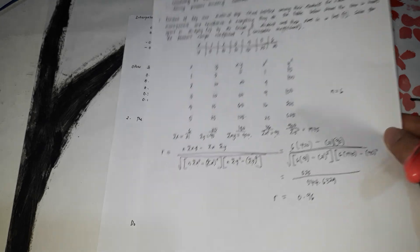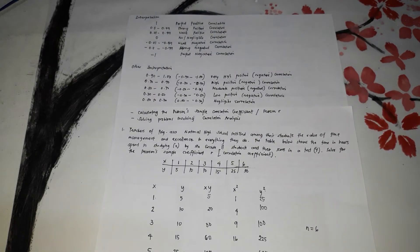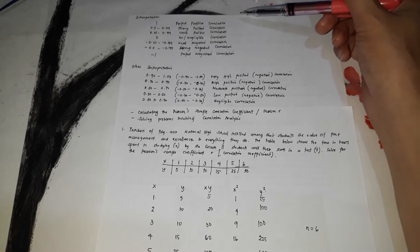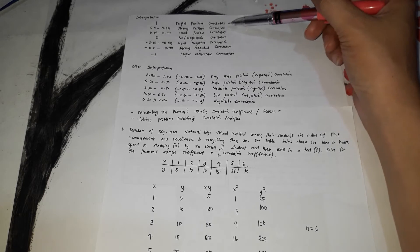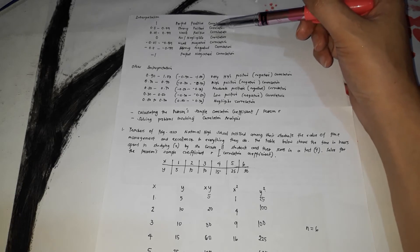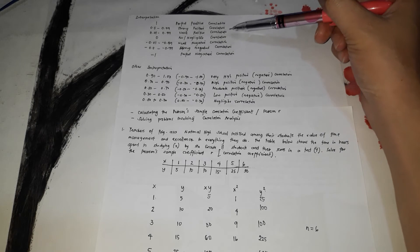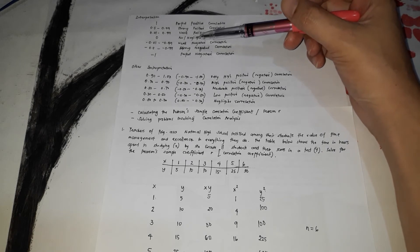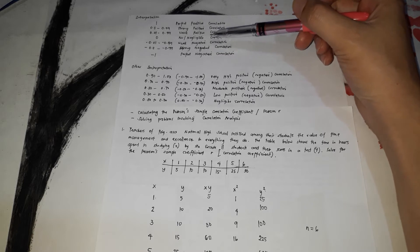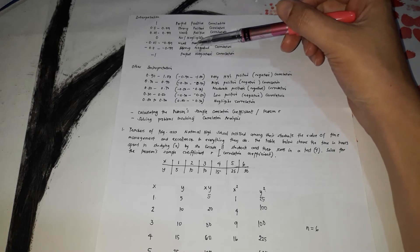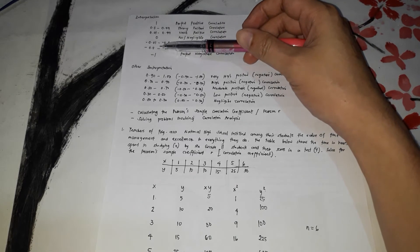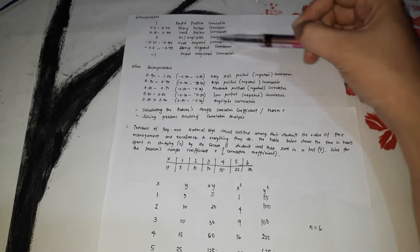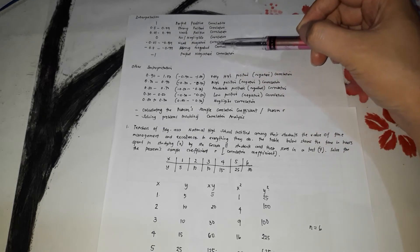What does R = 0.96 mean? There are different tables for interpreting R. The one we are going to use is: R=1 is perfect positive correlation; 0.5 to 0.99 is strong positive; 0.01 to 0.49 is weak positive; 0 is no or negligible correlation; −0.01 to −0.49 is weak negative; −0.5 to −0.99 is strong negative; and −1 is perfect negative correlation.